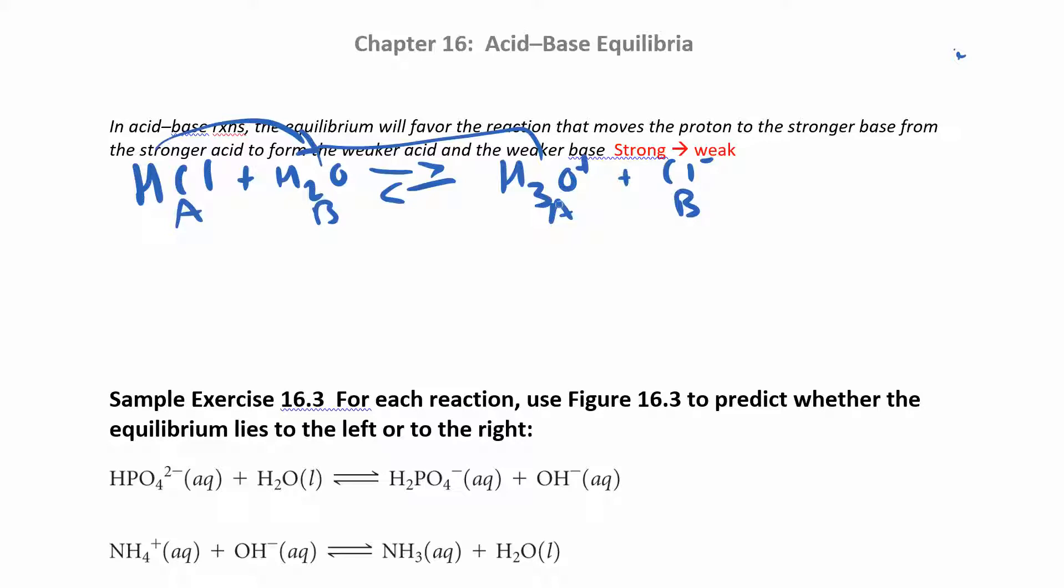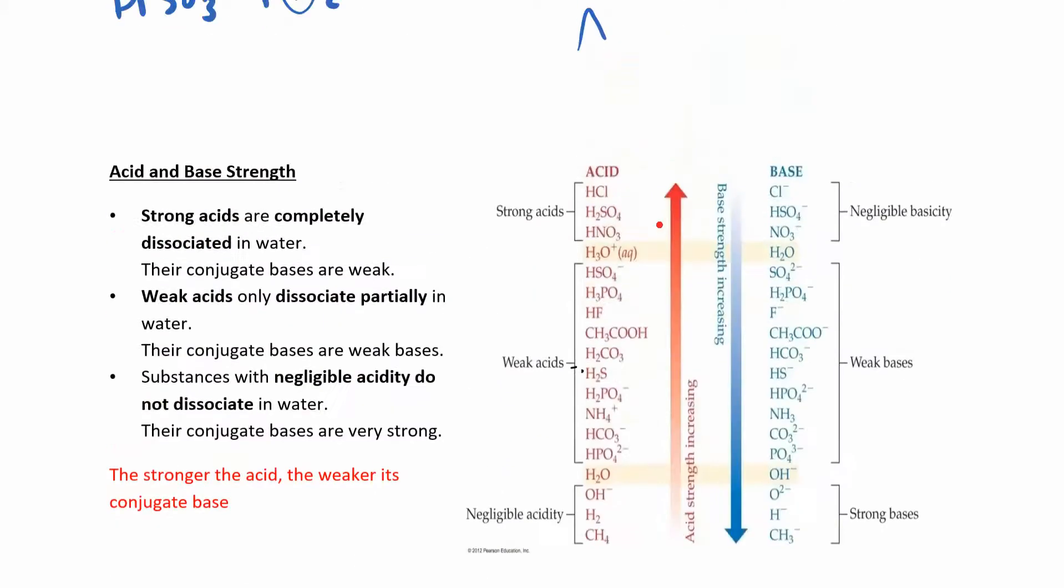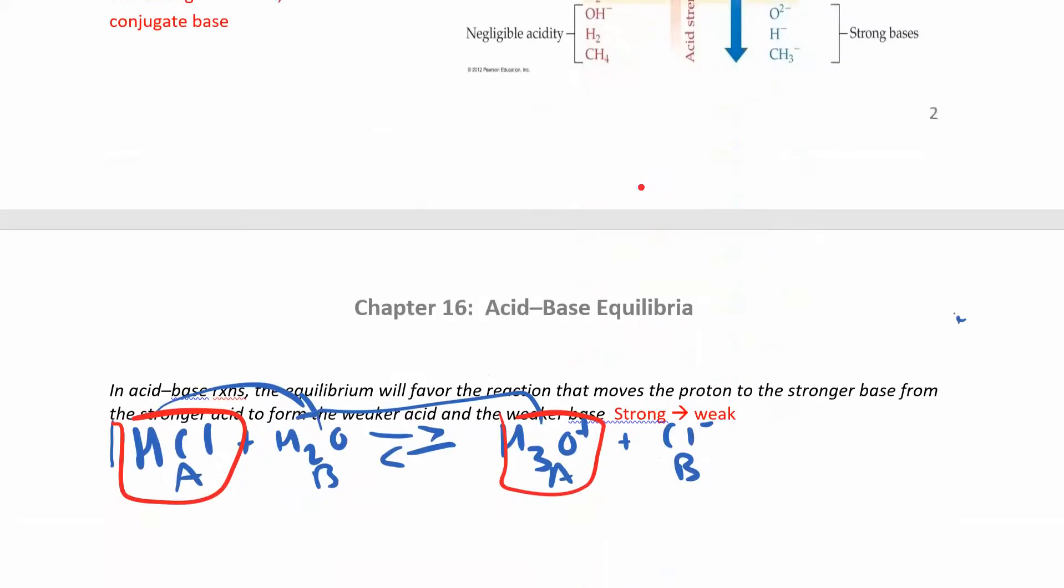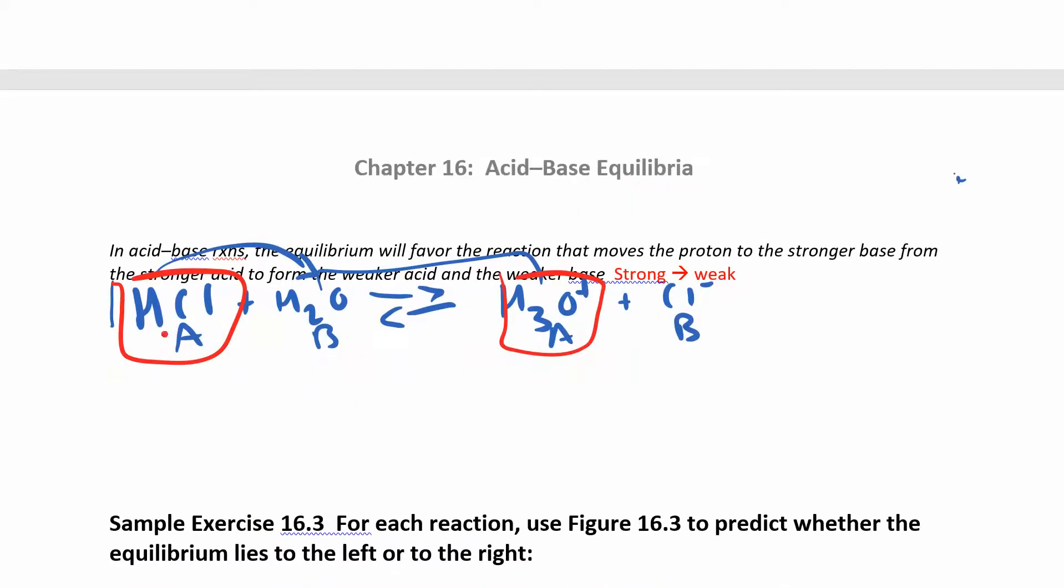This H3O plus has an extra hydrogen, so that's the acid. This guy is the base. And so what we're going to do now is we want to compare this acid to this acid in the table. So you're going to compare acids to acids in the table and try to figure out which one's stronger. So is HCl stronger than hydronium or is hydronium stronger than HCl? So you go over here and you see HCl is on the top of the list. So this is the stronger acid. Hydronium is right here, so it's a little bit weaker. And so this is the stronger acid. This is the weaker acid.